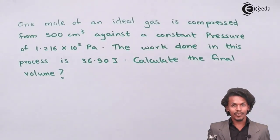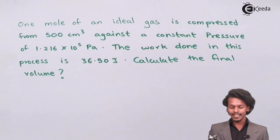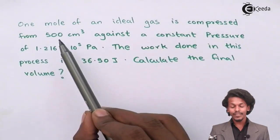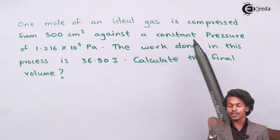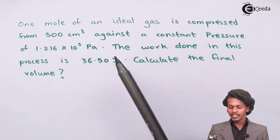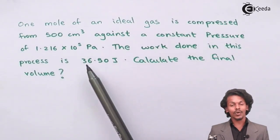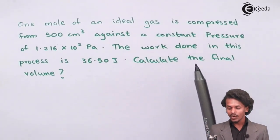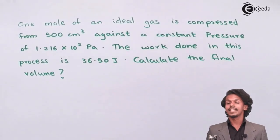This is the question that they have provided to us in which they say that one mole of an ideal gas is compressed from 500 cm³ against a constant pressure of 1.216×10⁵ Pascal. The work done in the process is found to be 36.50 joules. So we have to calculate the final volume in this case.